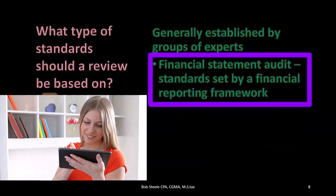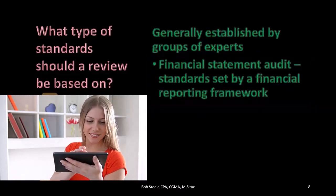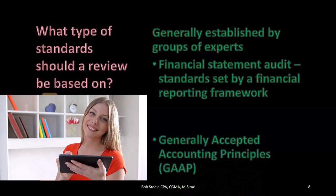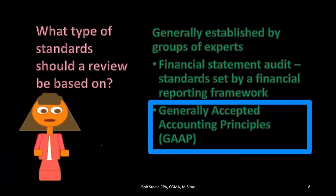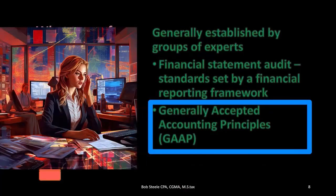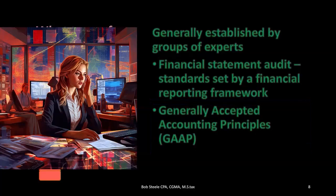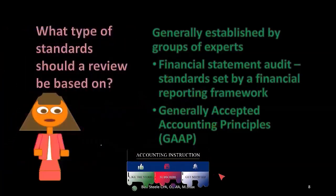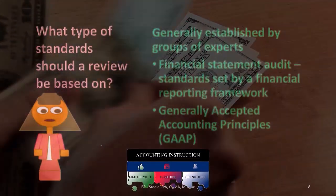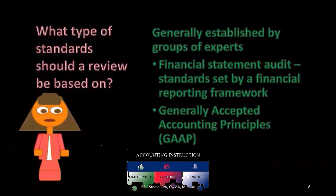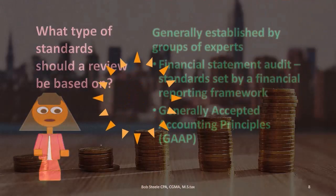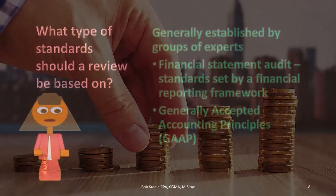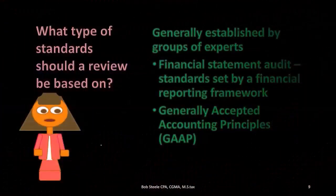For financial statement audits, we look at a financial reporting framework. Normally that's Generally Accepted Accounting Principles — GAAP. In a typical audit, we check whether the financial statements adhere to GAAP. However, other standards are possible. For example, if you're getting a bank loan and the bank accepts the cash basis or financial statements in accordance with the tax code, we might be reviewing against the IRS tax code or a cash basis framework.